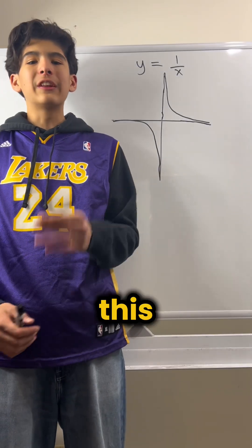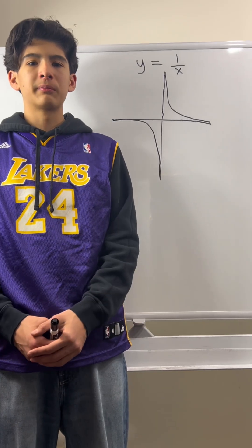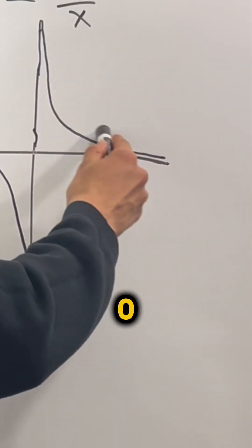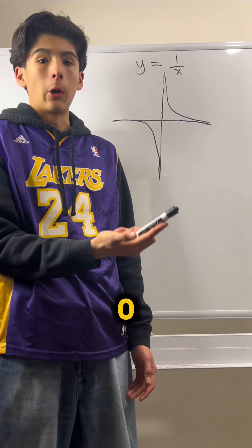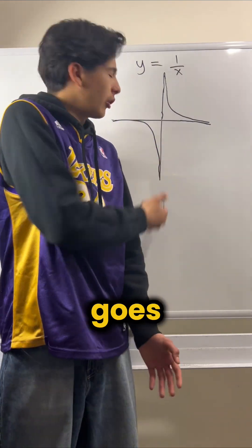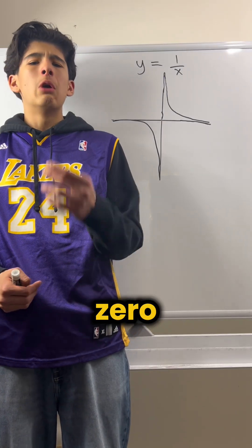Now, if you look at this graph, it seems to be touching the y-axis, but it actually never does. Look, as it gets closer to zero, it goes all the way up. And if it gets closer to zero, but from the negative side, it goes all the way down. But it will never actually touch zero. Why?